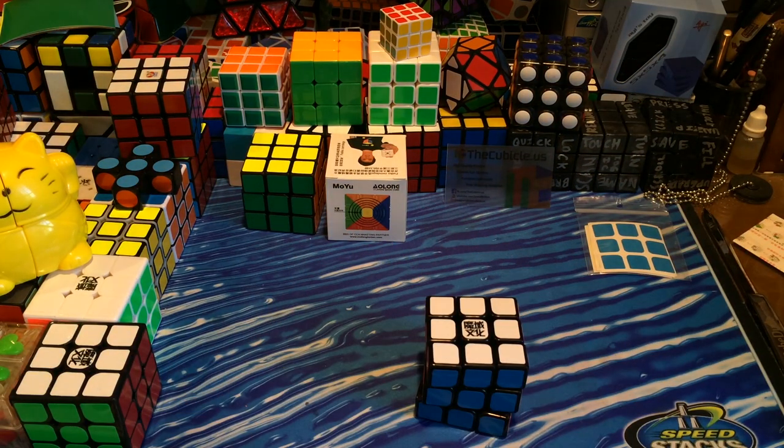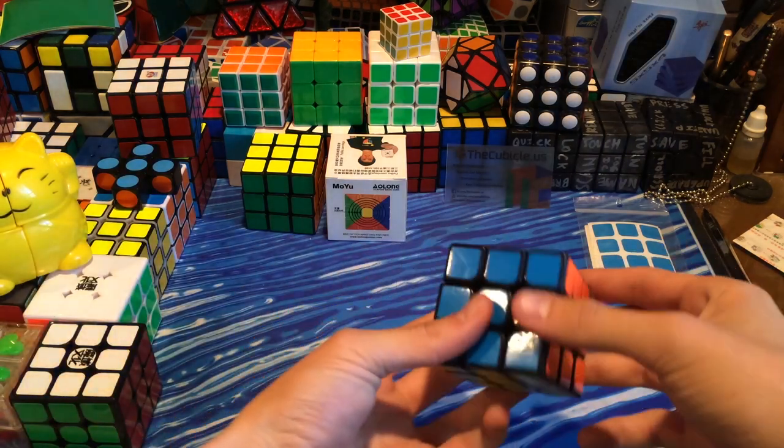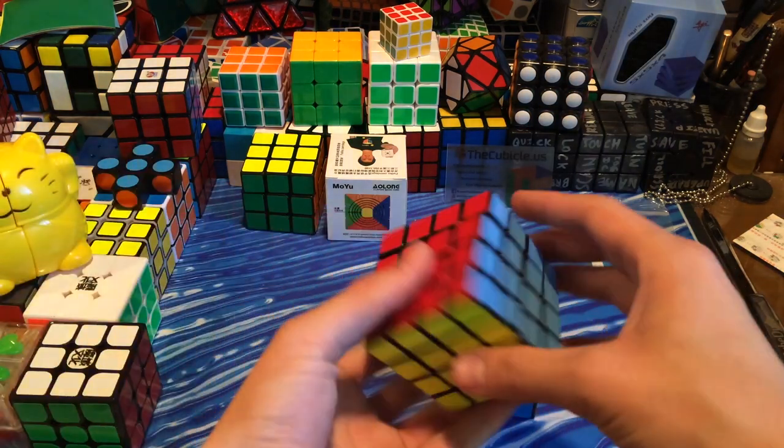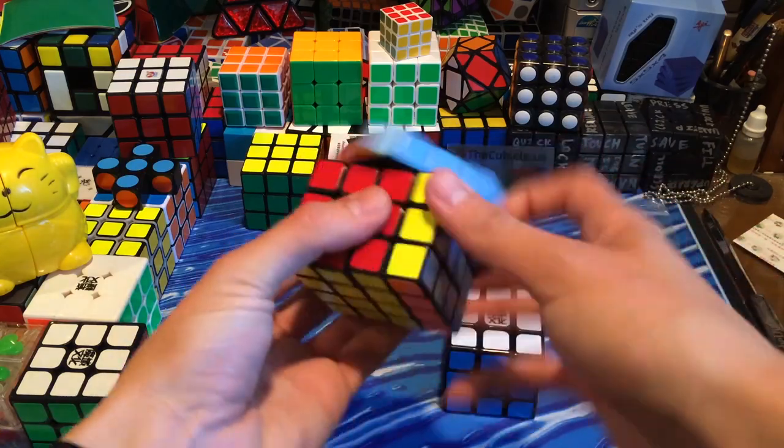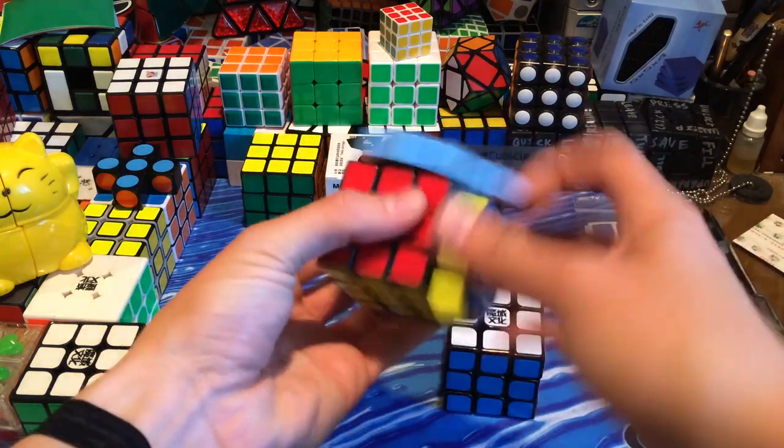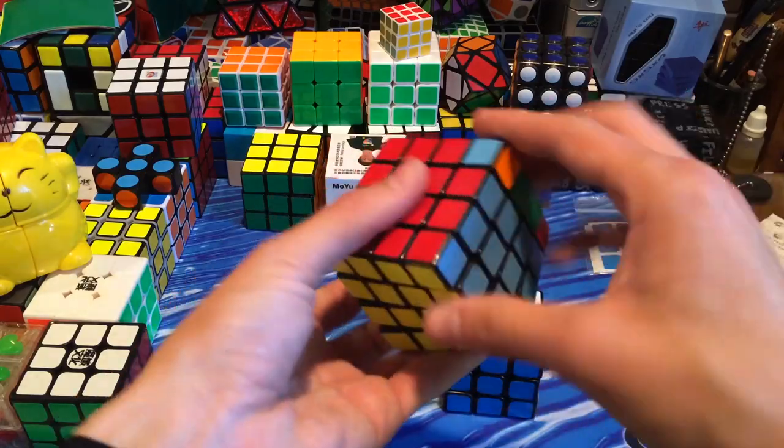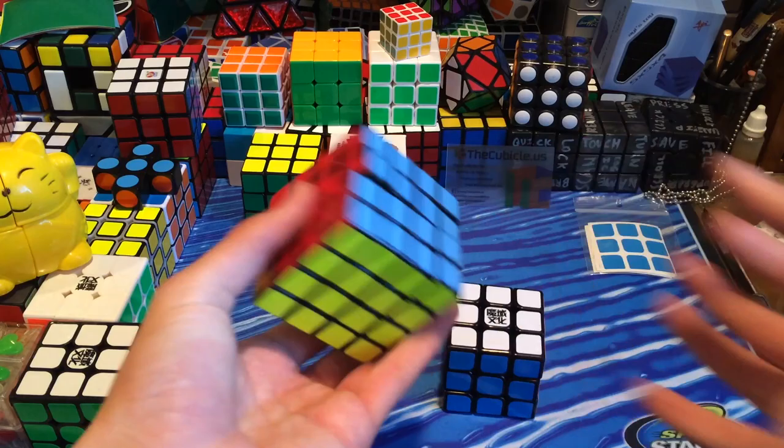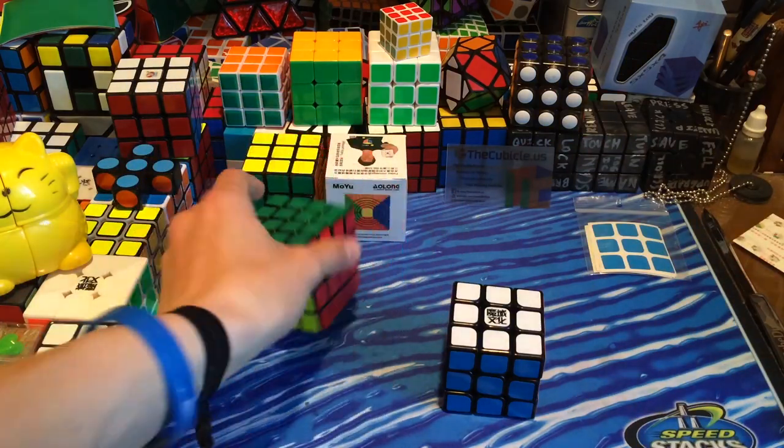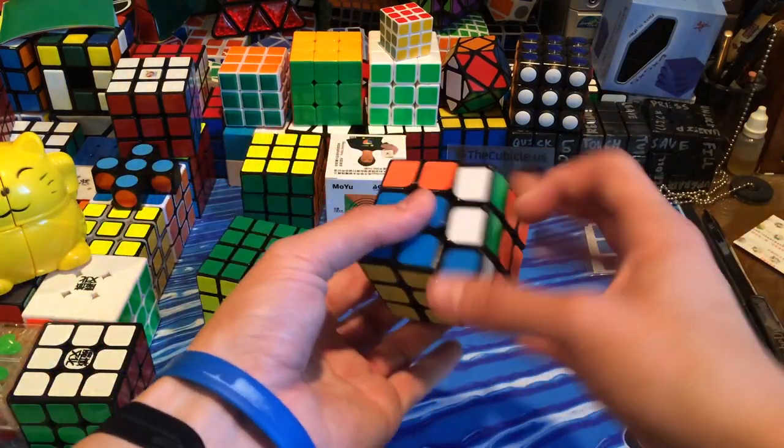One interesting thing I heard about the Moyu Aolong or the Moyu Weilong version 3 is that somebody compared it to the feel of a Moyu Aosu 4x4 and I think that's semi accurate. The Moyu Aosu is an amazing 4x4 and the 3x3 stage on this is really easy. This is probably as good as some of the speed cubes out there for 3x3. So it's as if they just made the Moyu Aosu into a 3x3.